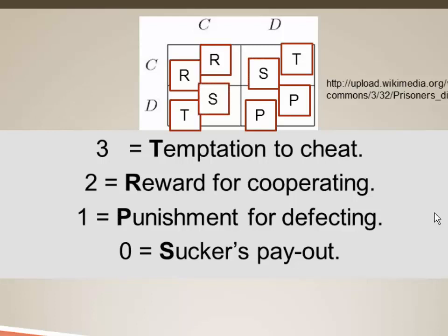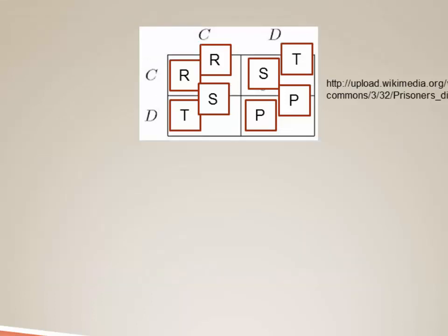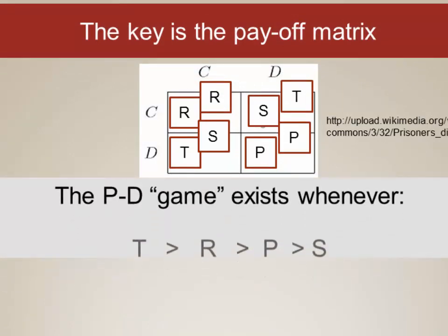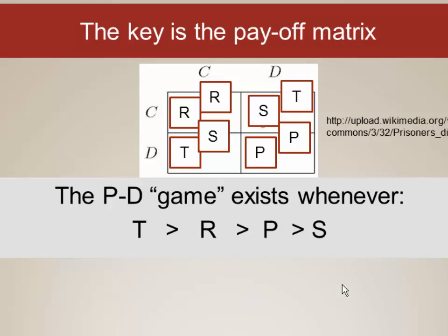It's not the exact numbers that matter, but rather the relationship between them. We have a Prisoner's Dilemma whenever the payoffs are structured so that T (the temptation to cheat) is greater than R (the reward for cooperation), which is greater than P (the punishment for defecting), which is greater than S (the sucker's payoff). These inequalities must hold in this order.